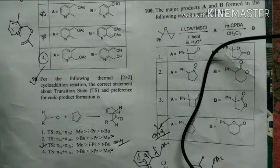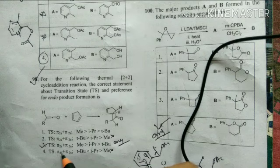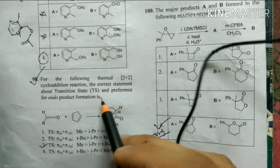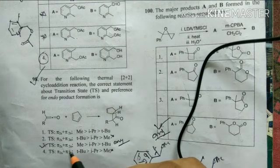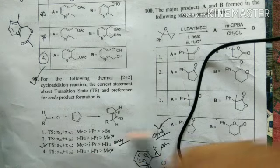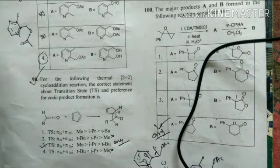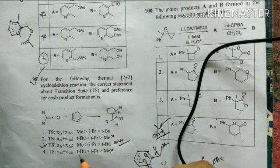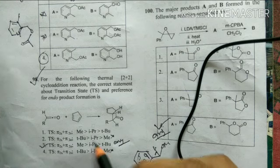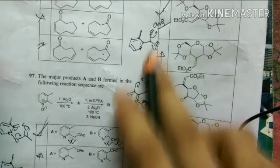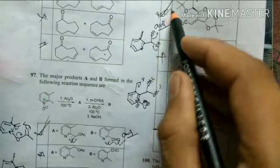The next question involves a [2+2] cycloaddition. Since it is stated to be a thermal reaction, it proceeds as π2s + π2a — I discussed this in detail in the pericyclic reaction video. For the Diels-Alder endo product selectivity question: smaller groups favor more endo product, giving the order methyl > isopropyl > tert-butyl. Option 3 is the correct answer.